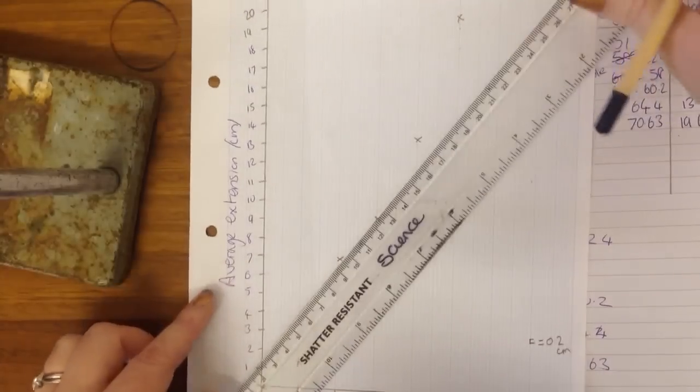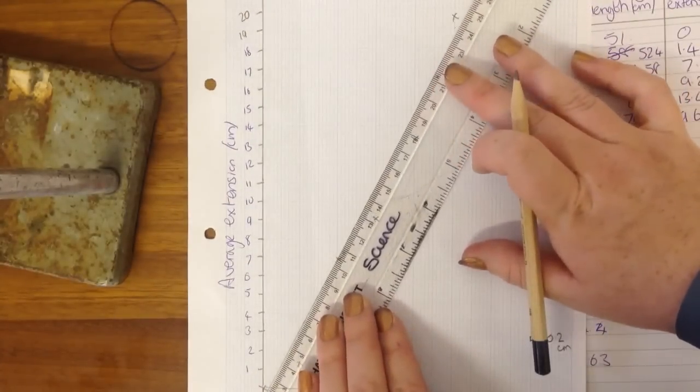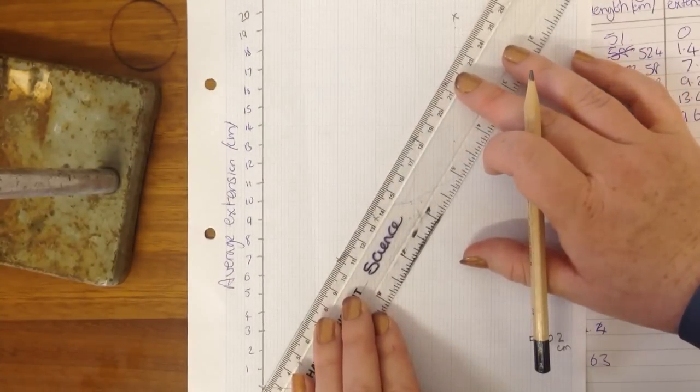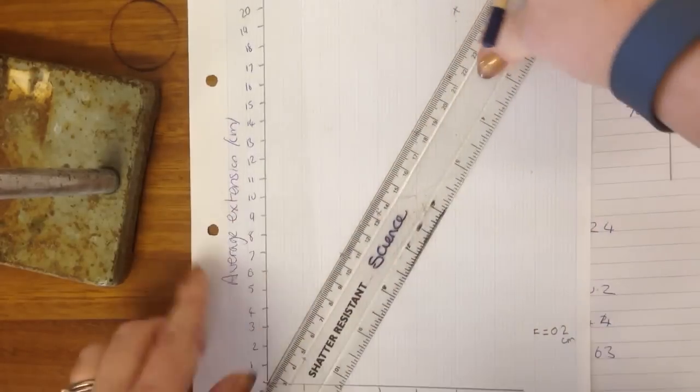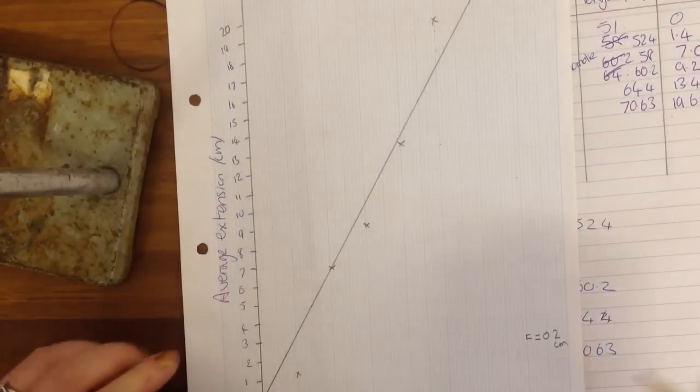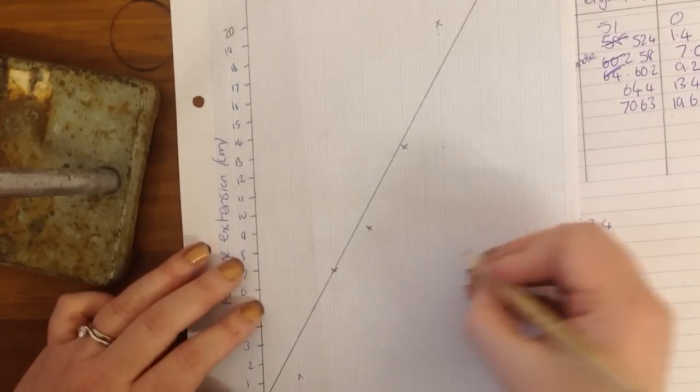And then what I should get is a lovely straight line through this. And because at 0 newtons we had 0 extension, this line has to go through the origin.